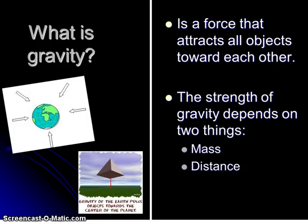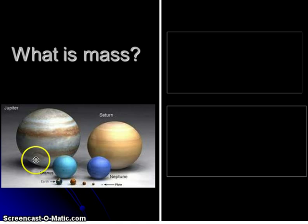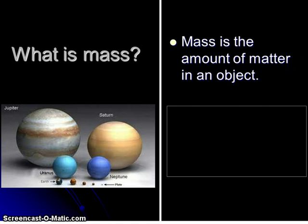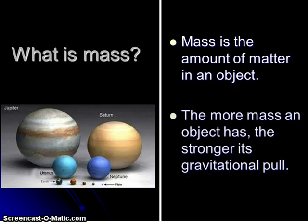Let's first talk about mass. Look at this picture — do you see the image of all the planets in our solar system? Look how massive Jupiter is in comparison to Earth. Earth is literally the size of the red spot on Jupiter. This means Jupiter has a ton of mass. The more mass an object has, the stronger its gravitational pull. And the smaller the mass, the less its gravitational pull.